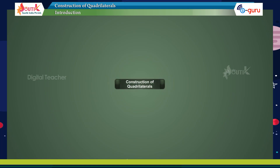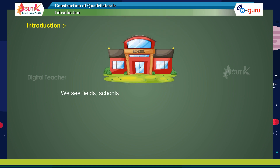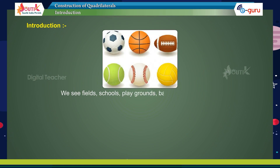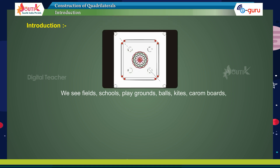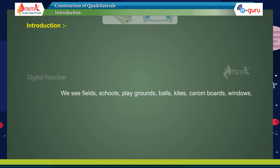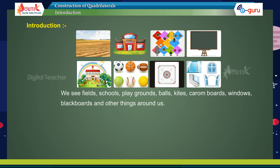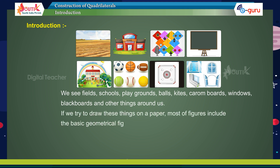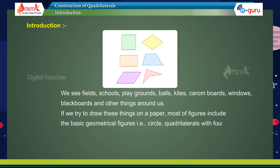Construction of Quadrilaterals. Introduction: We see fields, schools, playgrounds, balls, kites, carom boards, windows, blackboards, and other things around us. If we try to draw these things on paper, most of the figures include basic geometrical figures, i.e., circle, quadrilateral with four sides, etc.